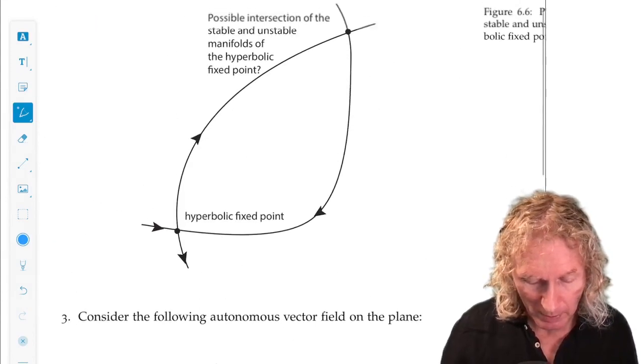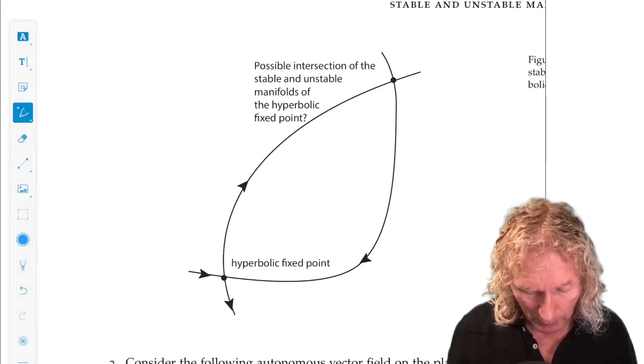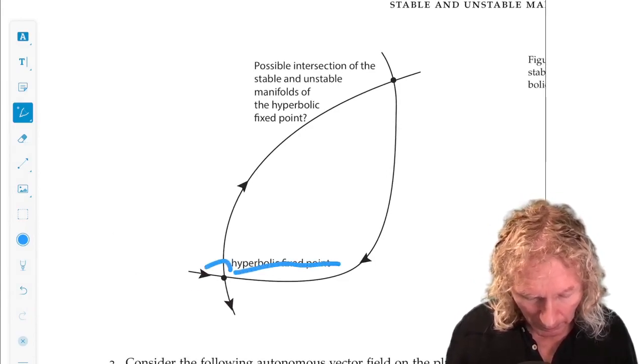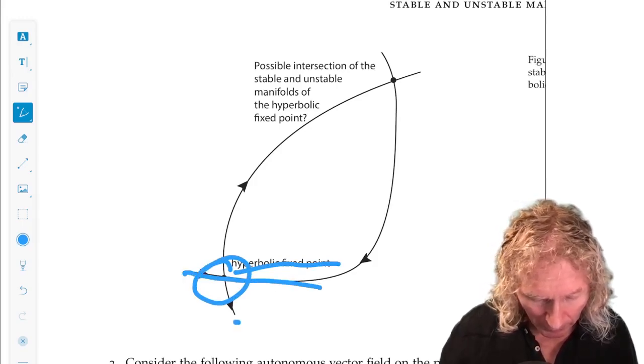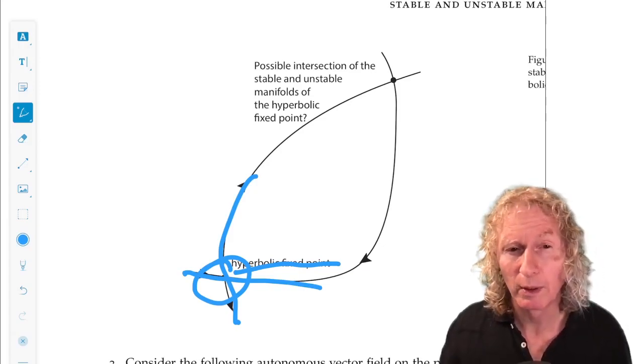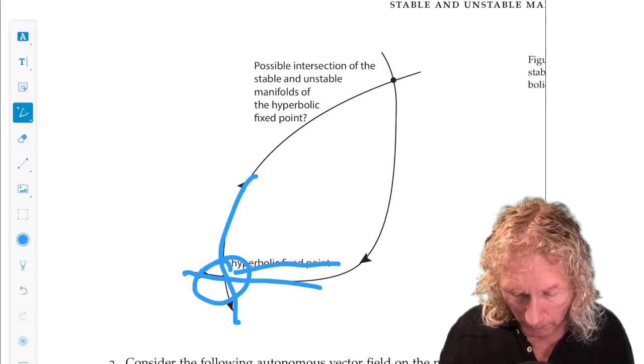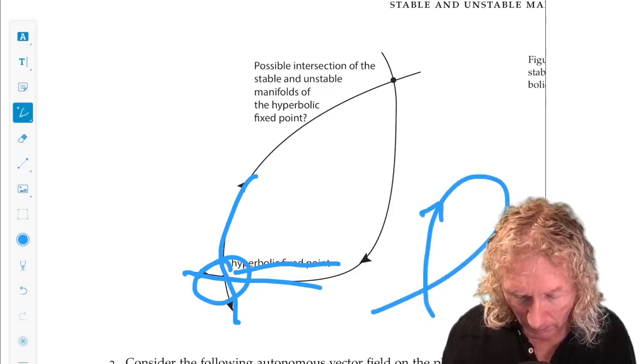So this is what I mean by that. Here's your hyperbolic fixed point, equilibrium point. It's stable and unstable manifold. Can they intersect at an isolated point? That is, without having to coincide like this.